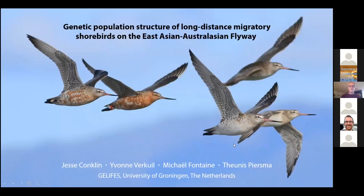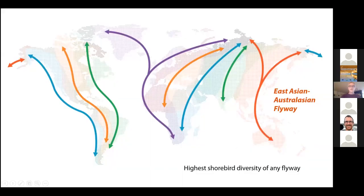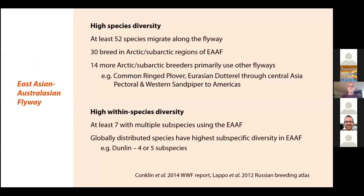My work is derived from all the global flyways. The East Asian flyway, as you'll probably hear several times through this conference, is the most shorebird-diverse flyway in the world, and in different aspects it's highly diverse — with high species diversity.